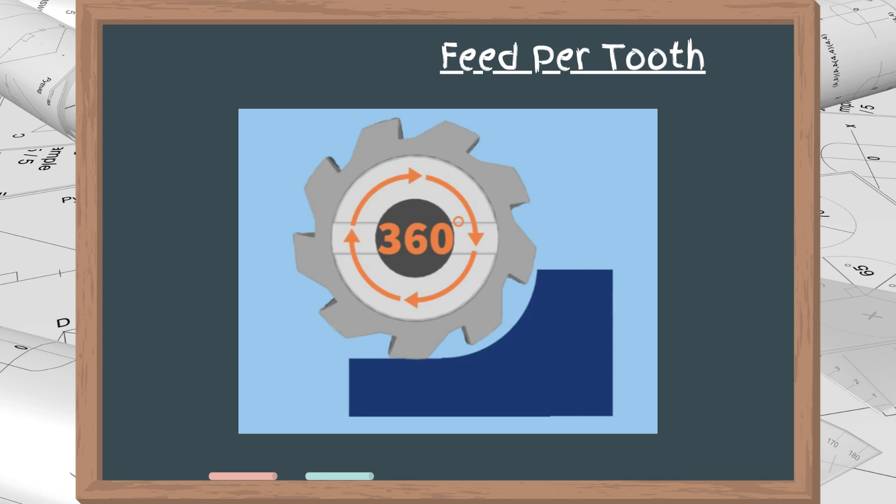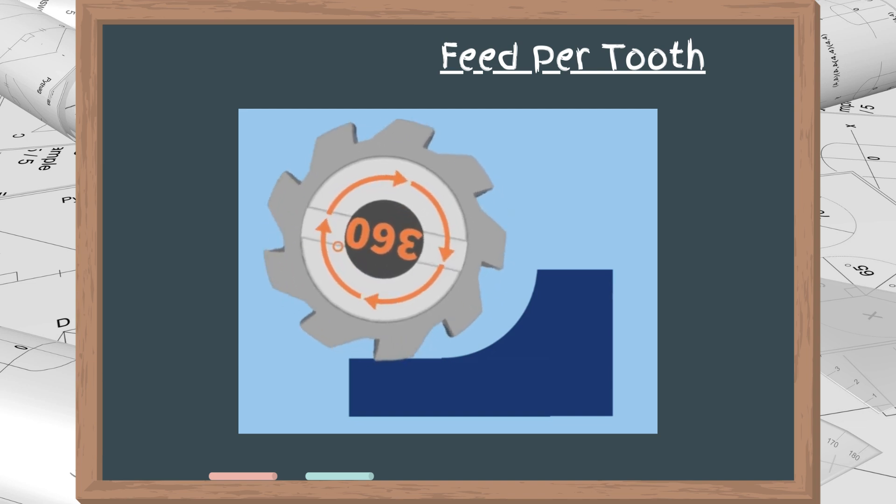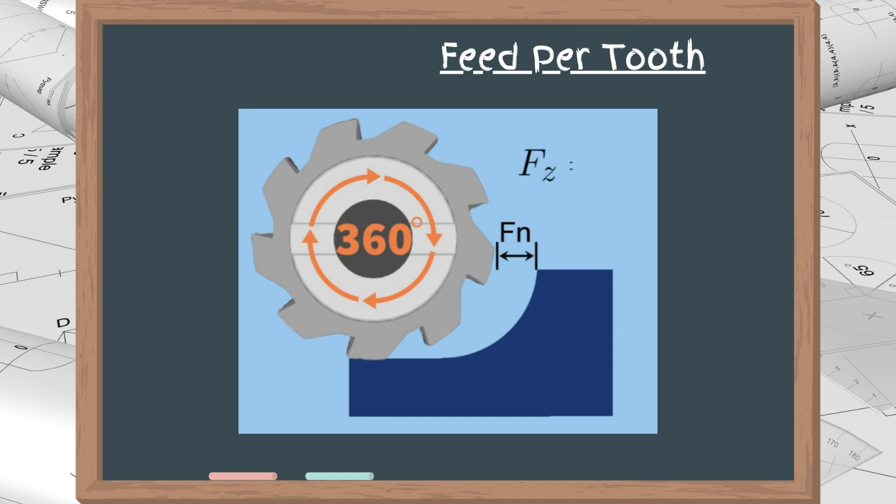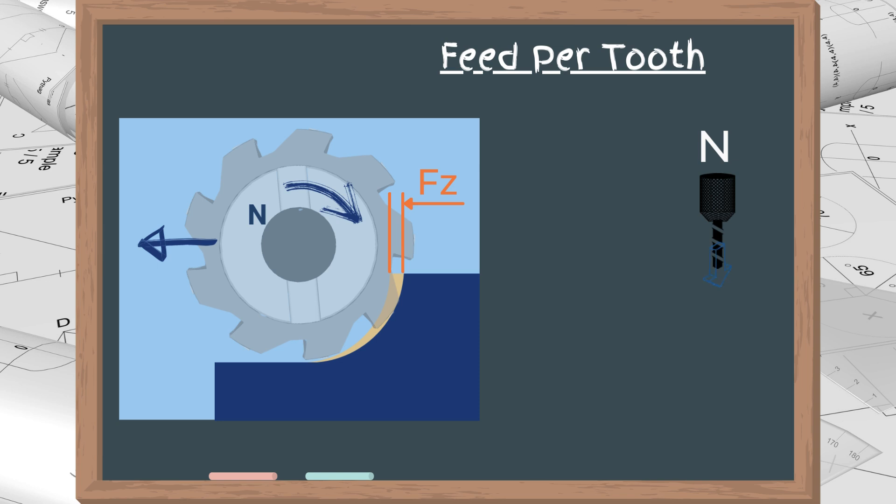In milling, feed per tooth, also known as Fc, is the linear distance traveled by a milling cutter during one full spindle rotation divided by the number of teeth on the cutter. Typically, we have information on the spindle speed and table feed. In such a case, it can be calculated by dividing the table feed by the product of the spindle speed and the number of teeth. Fc equals Vf divided by N times Z.